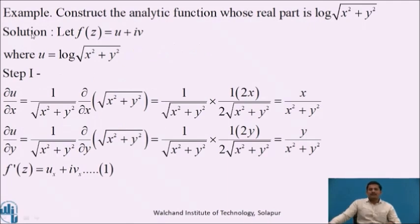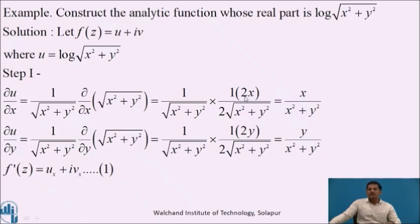Let us consider an example: construct the analytic function whose real part is u = log(√(x² + y²)). The real part is given, so we denote it u and want to find f(z). Step 1 is to find the partial derivatives. Differentiating u partially with respect to x using the log-of-a-function formula: ∂u/∂x = (1/√(x²+y²))·(∂/∂x)√(x²+y²) = (1/√(x²+y²))·(1/(2√(x²+y²)))·2x, which simplifies to x/(x²+y²).